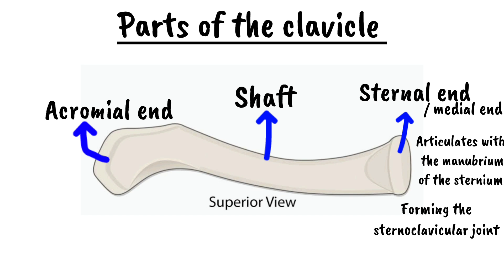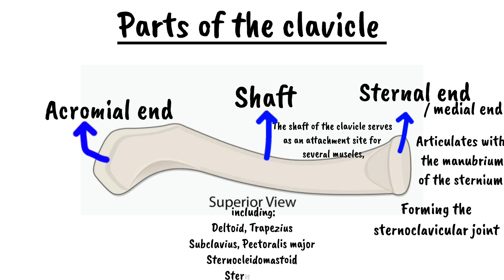The shaft of the clavicle serves as an attachment site for several muscles, including the deltoid, the trapezius, the subclavius, the pectoralis major, the sternocleidomastoid, and the sternohyoid muscles.